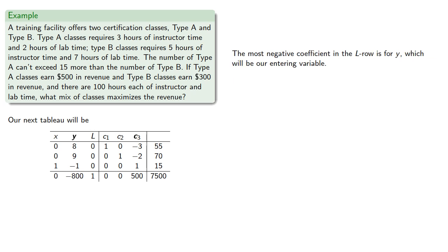The most negative coefficient in the L row is for Y, which will be our entering variable. We find the quotient 15 divided by negative 1, which we ignore since it won't be positive. The pivot row is the first row, and the exiting variable will be C1. And we'll row reduce.